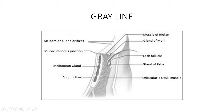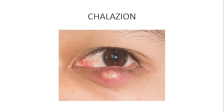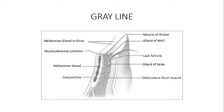What is chalazion? When the meibomian gland orifices are blocked, the meibomian gland cannot discharge its lipids to form part of the tear film. With time there is lipid accumulation within the gland itself, and it then forms what you call a sterile inflammatory granuloma within the tarsal plate. This is what we call chalazion.